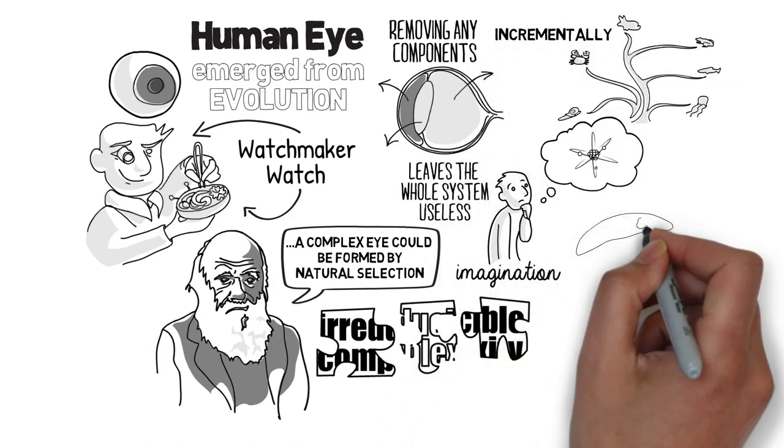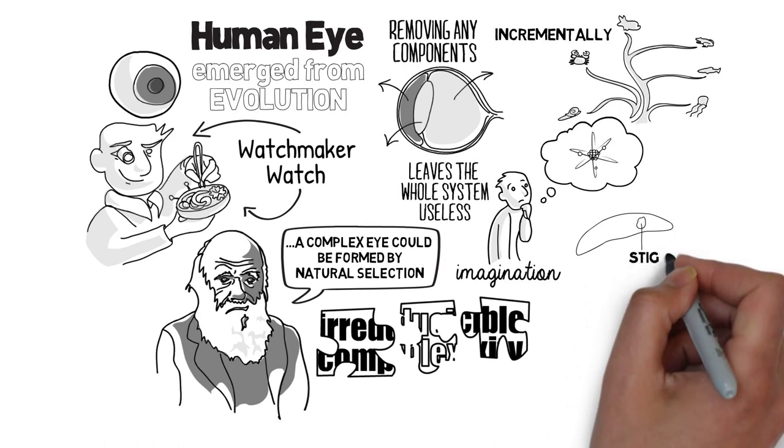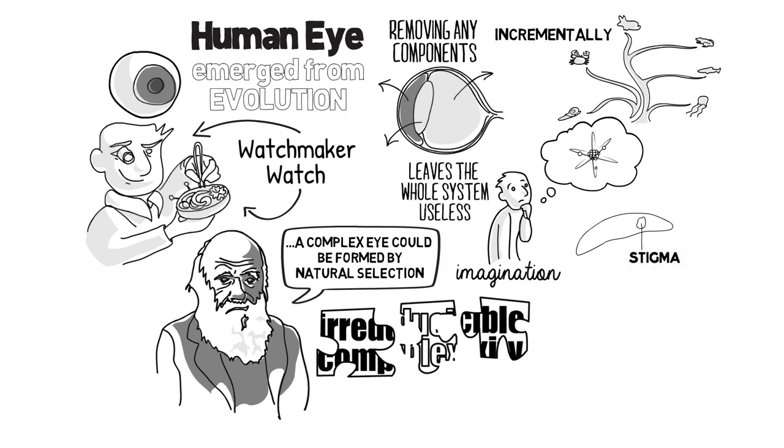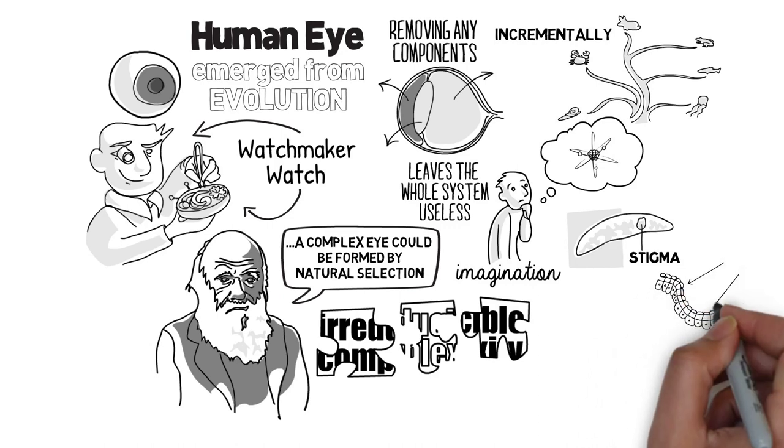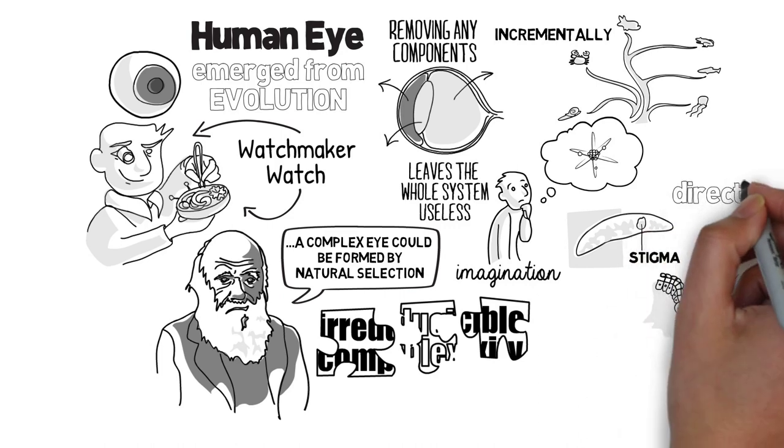Single-celled organisms have light sensitive patches known as stigma which differentiates between light and dark. If a pit developed in a patch of these cells it would cast a shadow revealing the direction of the light.